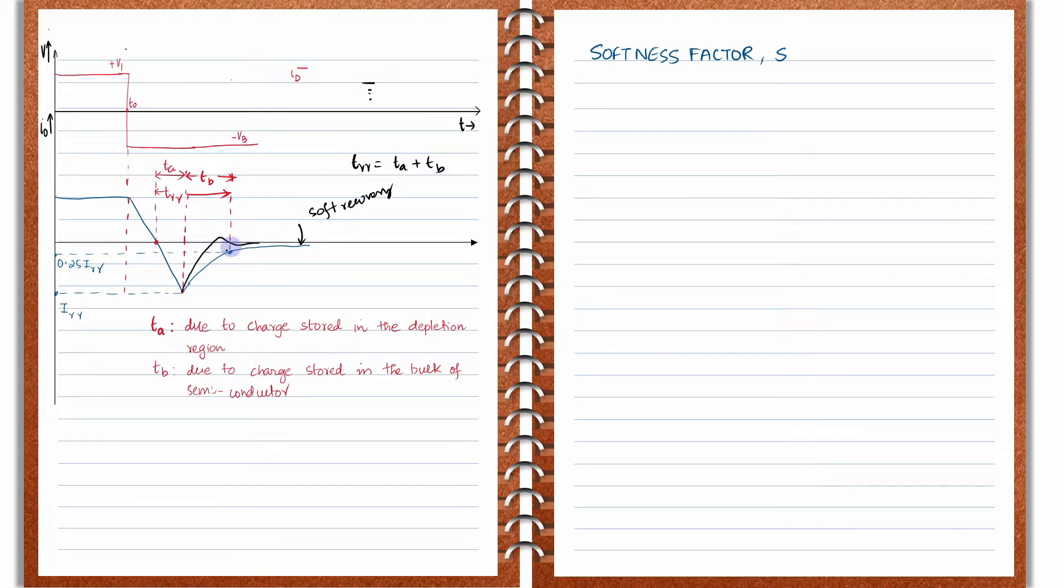You can see compared to this blue color recovery, the black color recovery is a little bit faster. Sometimes it has a small overshoot like this. This type of recovery is also called an abrupt recovery.